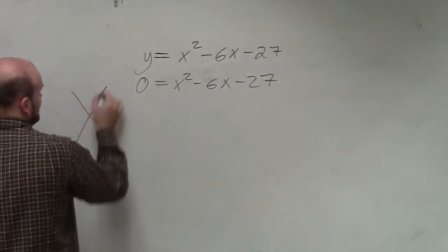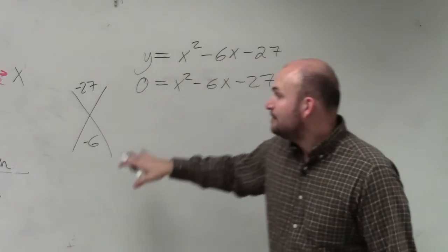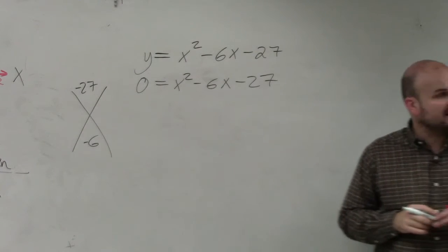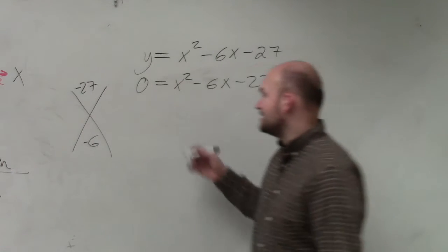I'm going to do this fairly quickly, just do this in my head because we've already done some factoring practice. Basically, the question is asking us what two numbers multiply to give you negative 27, but add to give you negative 6? Negative 9 and positive 3.